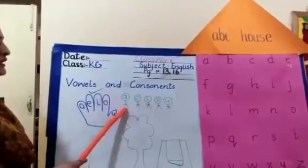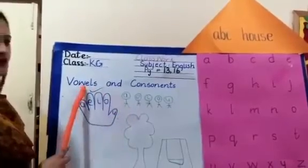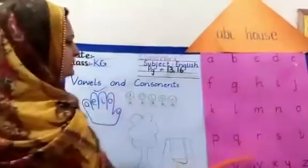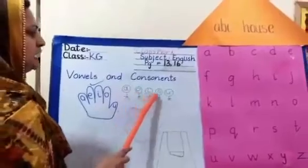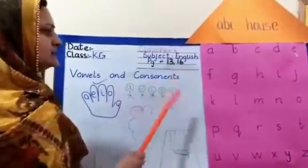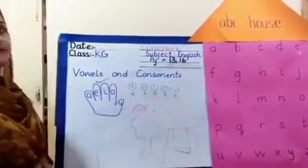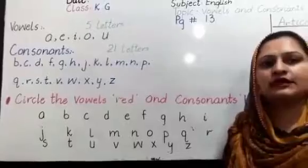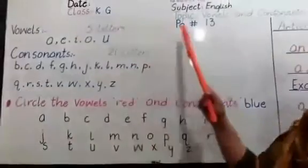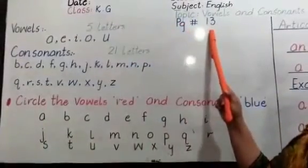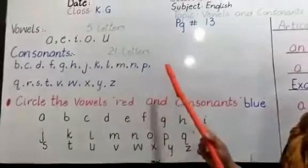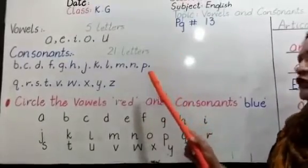Whenever they are written, they are known as vowels. And the rest of the letters — except A, E, I, O, U — they are called consonants. Now, dear students, we will do book page 13. The topic on book page 13 is vowels and consonants.